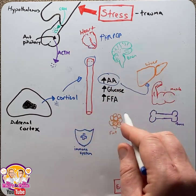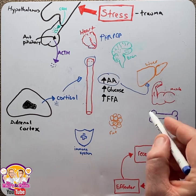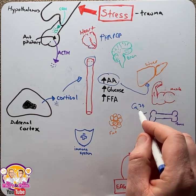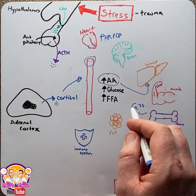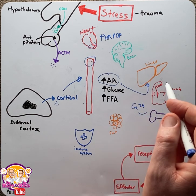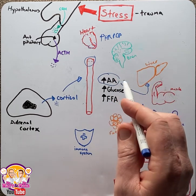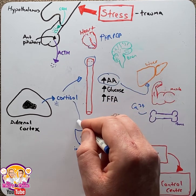Cortisol will break down bone to release calcium. Calcium is very important for muscle contraction, nerve conduction, and also blood clotting.